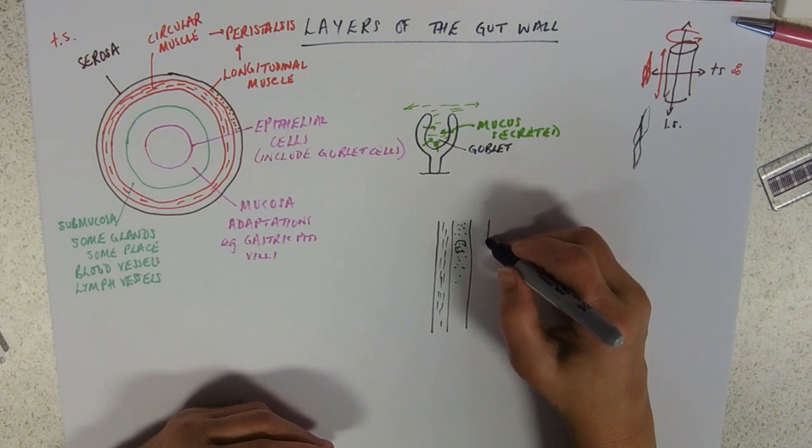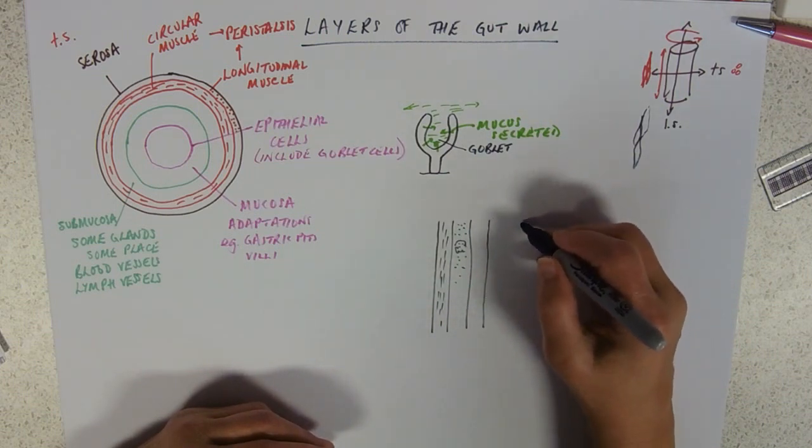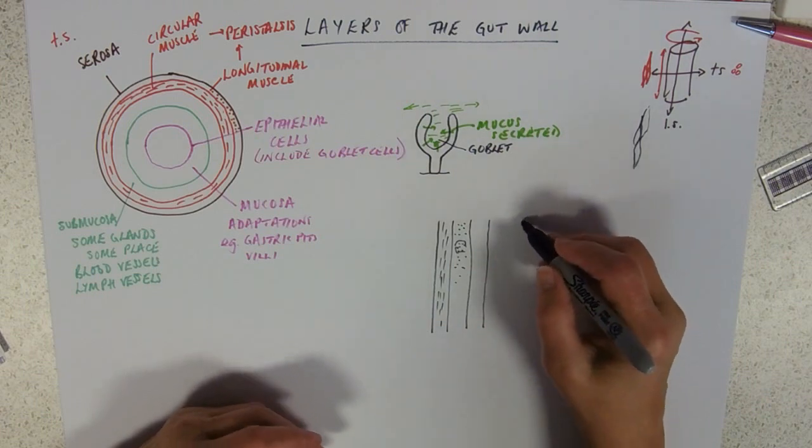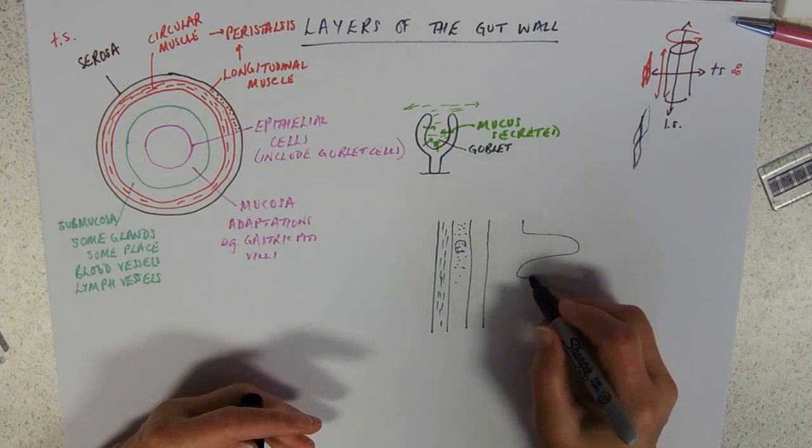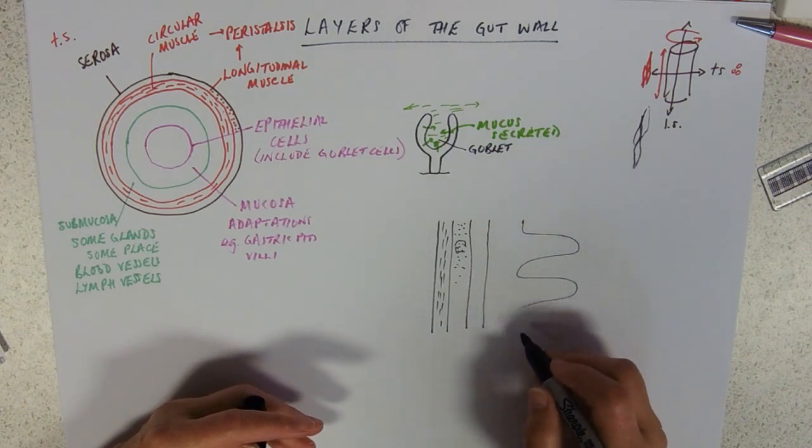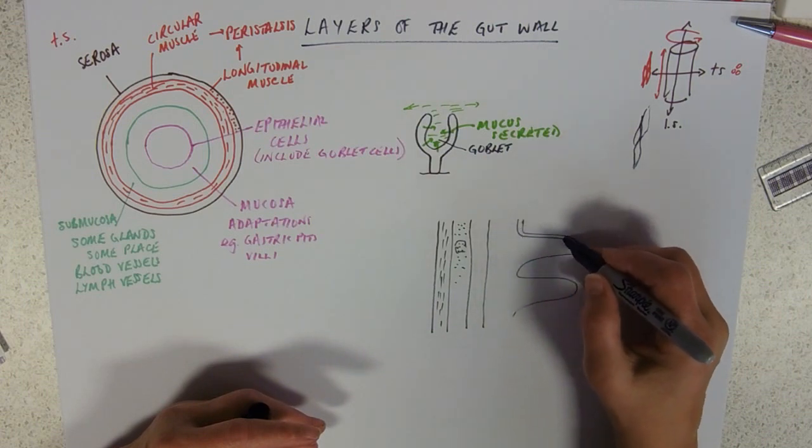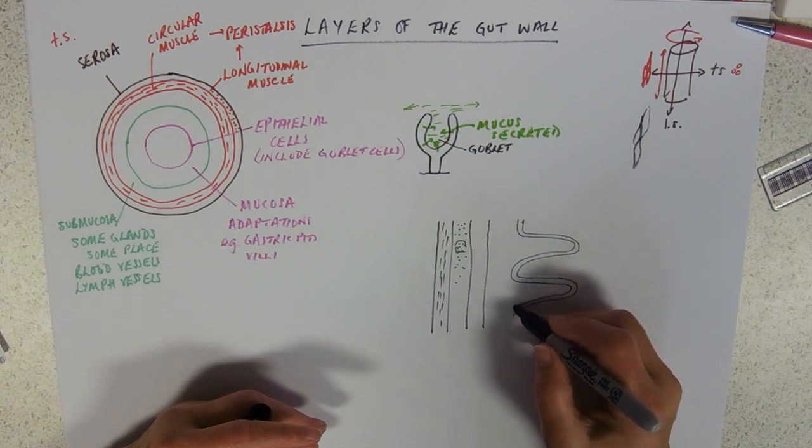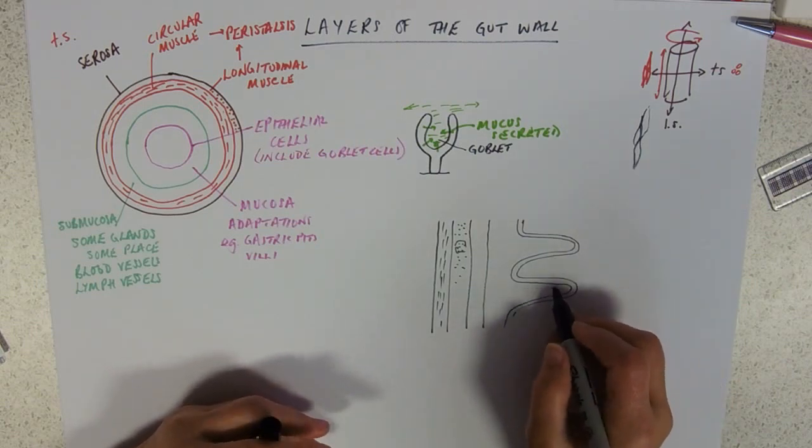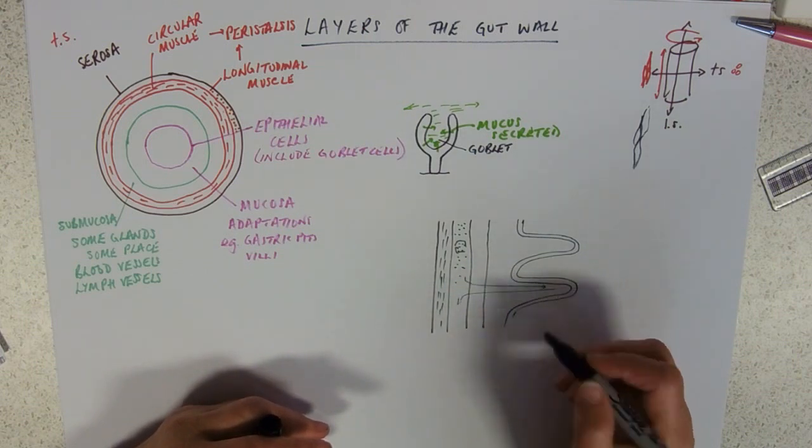Then you'll have submucosa with all its vessels in it, and then your mucosa, which again often you'll see the ileum or the duodenum where it's thrown up into folds with your layer of epithelial cells over the top and these vessels heading off down.